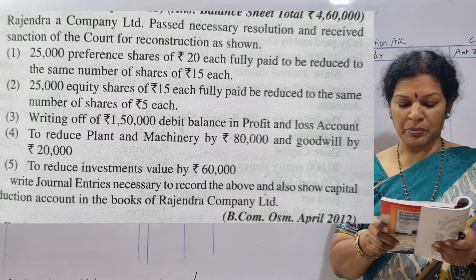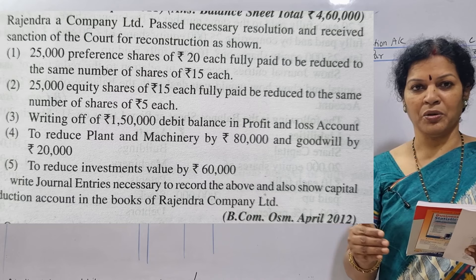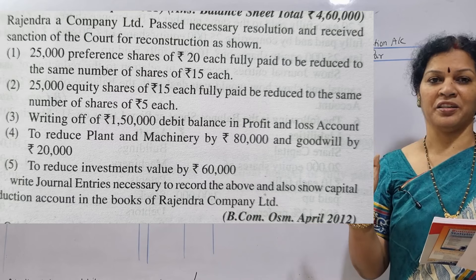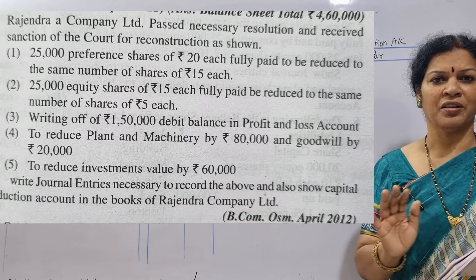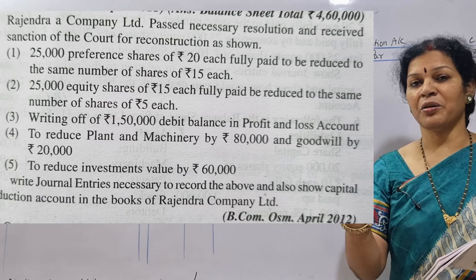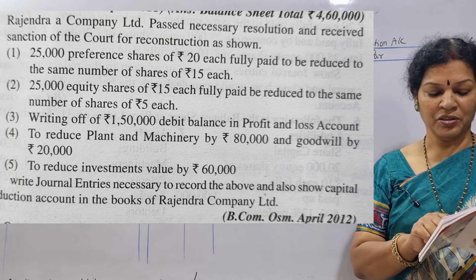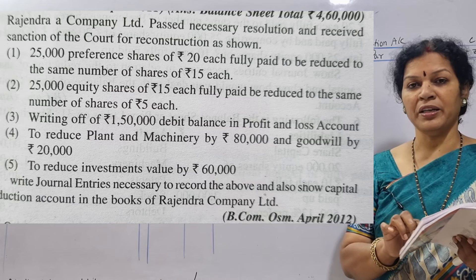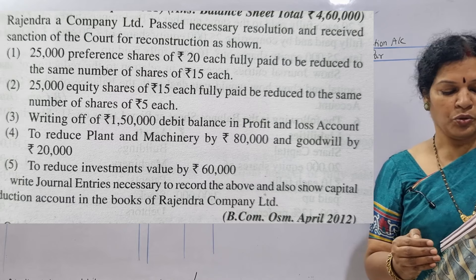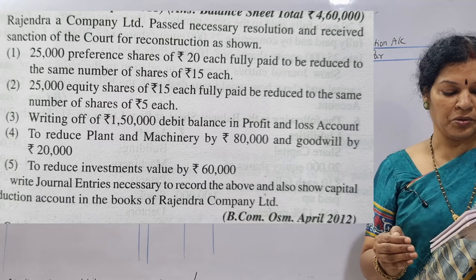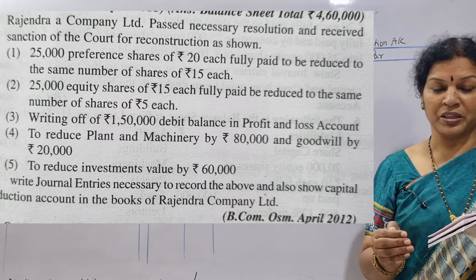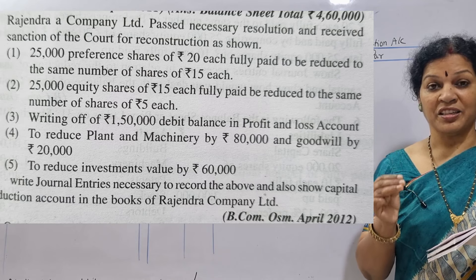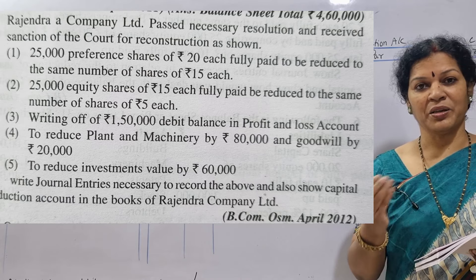Third point: write off ₹1,50,000 debit balance in profit and loss account. From here onwards we have the third entry — capital reduction account debit. In this problem we don't have debentures or creditors, so directly we are taking the fifth entry pattern: capital reduction account debit, to profit and loss account. To reduce plant and machinery by ₹80,000, goodwill ₹20,000, and investment value also decreased by ₹60,000. All these points come into the third entry. Once we write the entries, we can go for the capital reduction account.